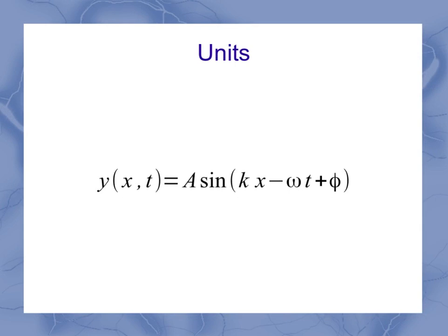So now we can look at the overall units. Starting with focusing on this purple box here. K, the angular wave number, is going to have units of radians per meter, followed by meters for the horizontal position.